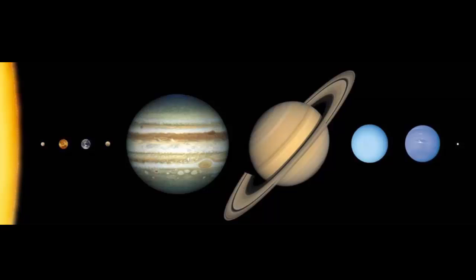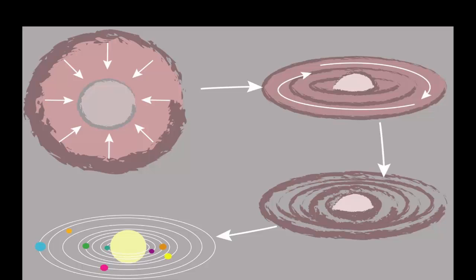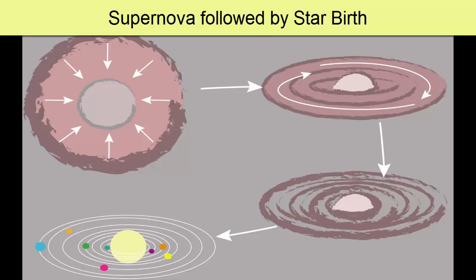Turns out that to create rocky planets the size of Mercury, Venus, Earth, Mars, and some of the rocky moons in our solar system, multiple episodes of star deaths, supernovas, and subsequent births from the remnants were necessary to cook up enough of the required heavy elements.